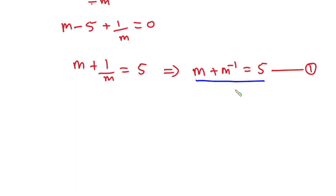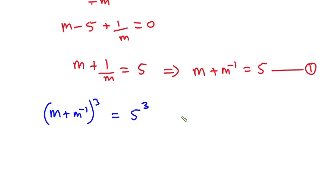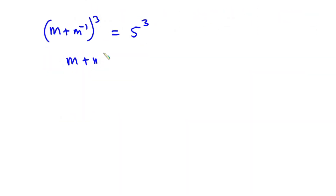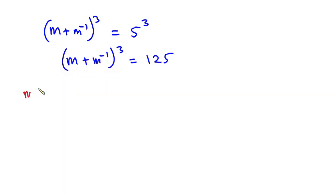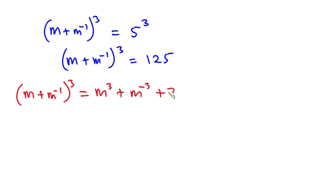Now let's raise each side of this equation to the third power. We have (m + m⁻¹)³ equals 5³, which is 125. Expanding the left-hand side: (m + m⁻¹)³ equals m³ plus m⁻³ plus 3 times m times m⁻¹ times (m + m⁻¹).